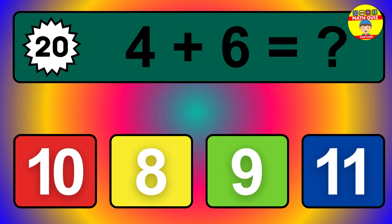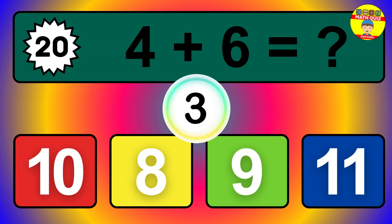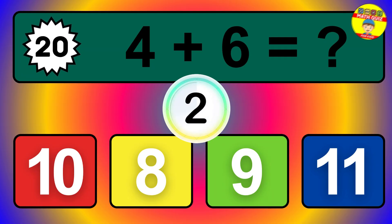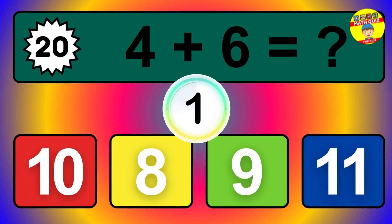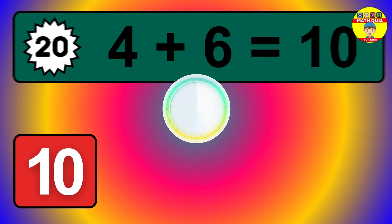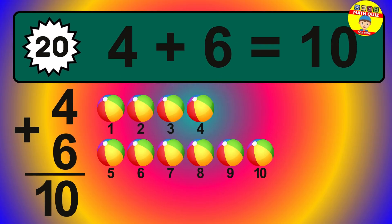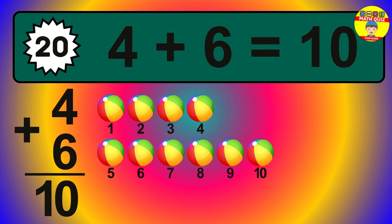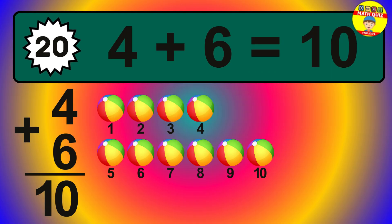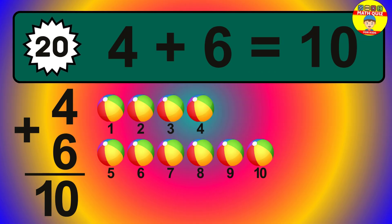Question 20. 4 plus 6 equals what? So the answer is 4 plus 6 is 10. Let's count it: 1, 2, 3, 4, 5, 6, 7, 8, 9, 10.